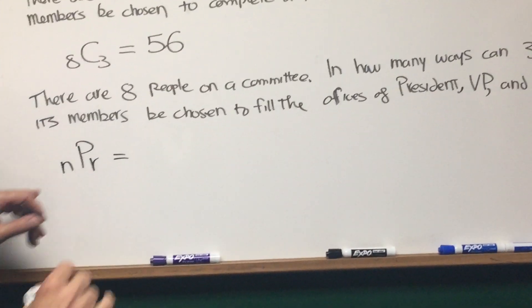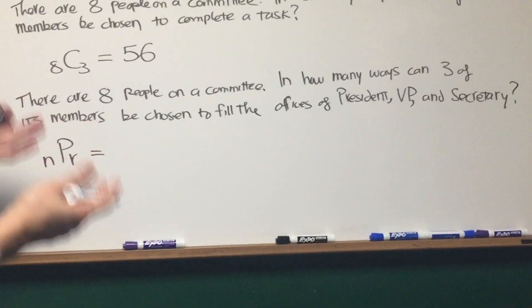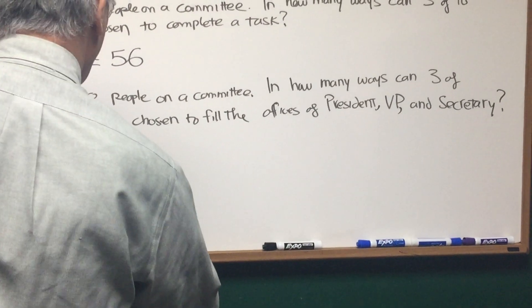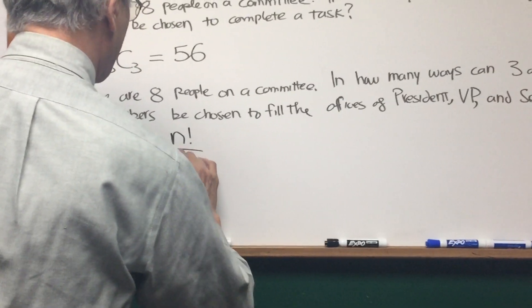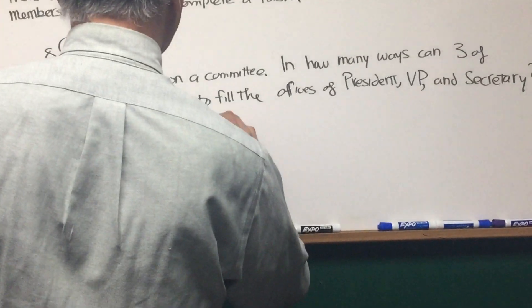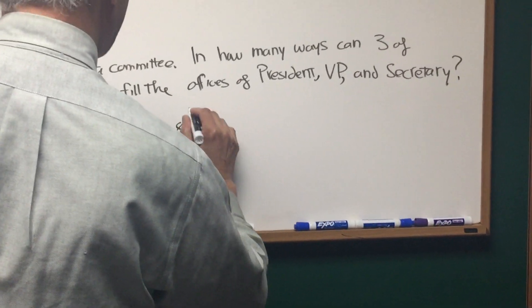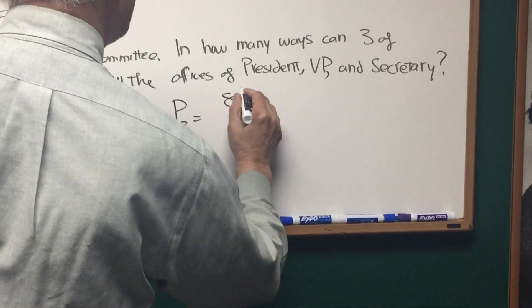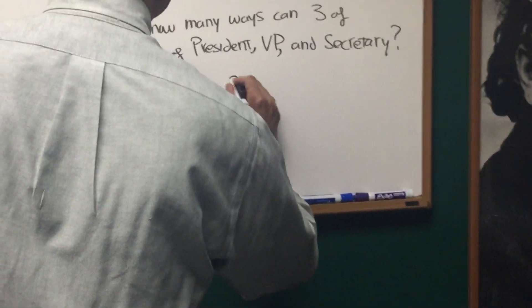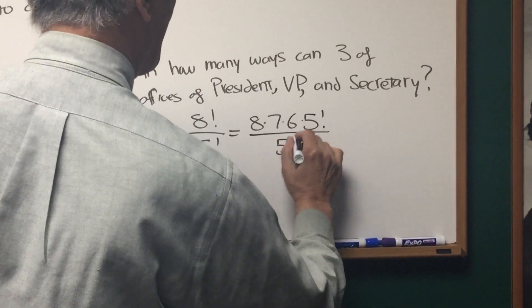NPR. The number of ways of choosing R things out of a total of N things when order counts. Order counts here because we have a ranking of the things that are chosen. So the formula for this is N factorial divided by N minus R factorial. So in this case, N is equal to eight and R is equal to three. So we have 8P3 or eight factorial over eight minus three or five factorial. And that gives us what?